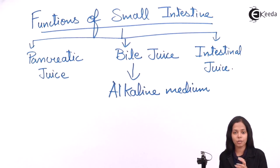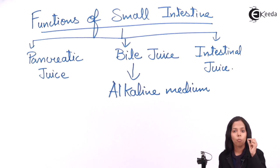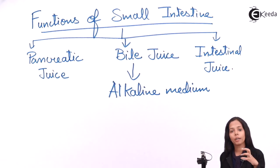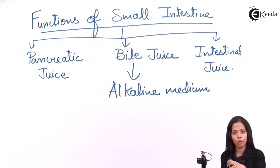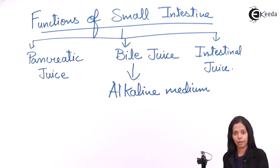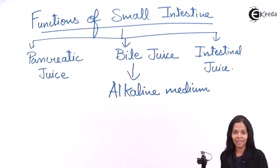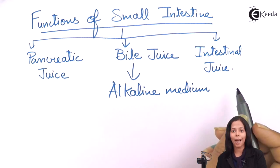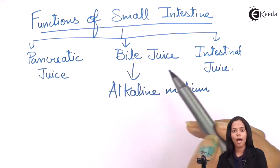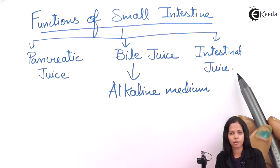The common duct is formed from two ducts: one coming from the liver called the hepatic duct, and one coming from the gall bladder called the cystic duct. They meet at a point and form a common duct which enters the small intestine — more specifically, the duodenum. Bile juice creates an alkaline medium, and this alkaline medium activates pancreatic juice enzymes and intestinal juice enzymes.